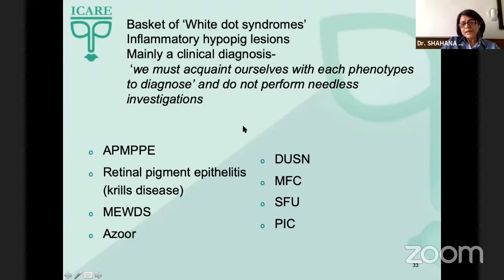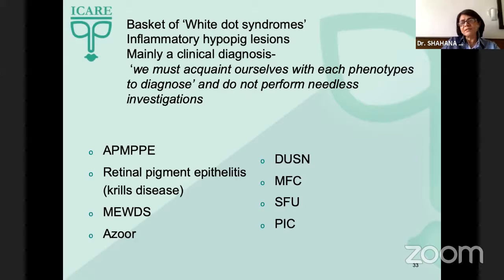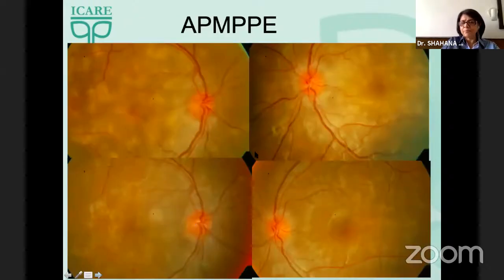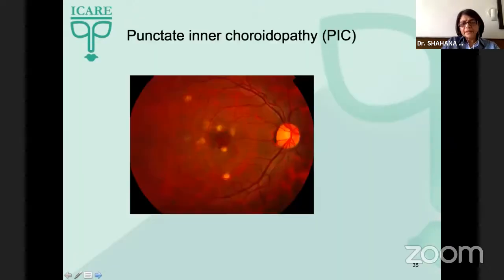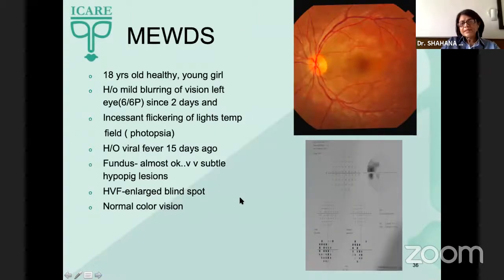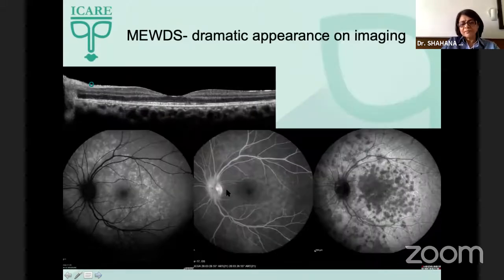White dot syndromes are a basket of inflammatory hypopigmented lesions — mainly a clinical diagnosis. We must acquaint ourselves with each of these phenotypes so that they become spot diagnoses. For example, this is an AMPI which healed like this; this is a patient with PIC; this is a patient with MUTES, where clinically we may not suspect much, but investigations reveal a dramatic picture.